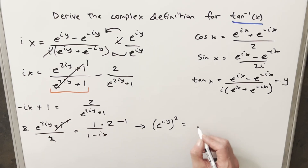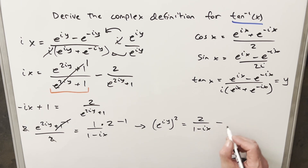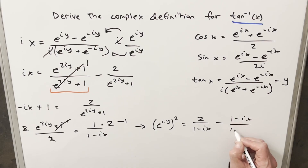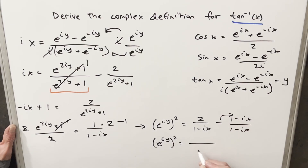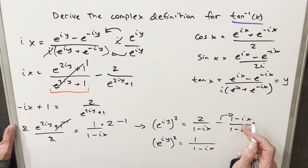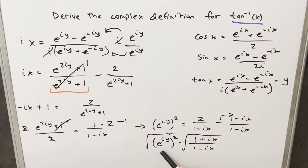Multiplying 1 times 2 gives 2 in the numerator over (1 minus ix). For the minus 1, I'll write it as (1 minus ix) over (1 minus ix) to get a common denominator and simplify. With the common denominator and distributing the minus sign, our denominator is (1 minus ix) and the numerator becomes 2 minus 1, which is 1, plus ix, giving us (1 plus ix) over (1 minus ix). Then I'll just take the square root on both sides — the square root cancels with the exponent of 2. We don't need to worry about absolute value because this is a complex number.